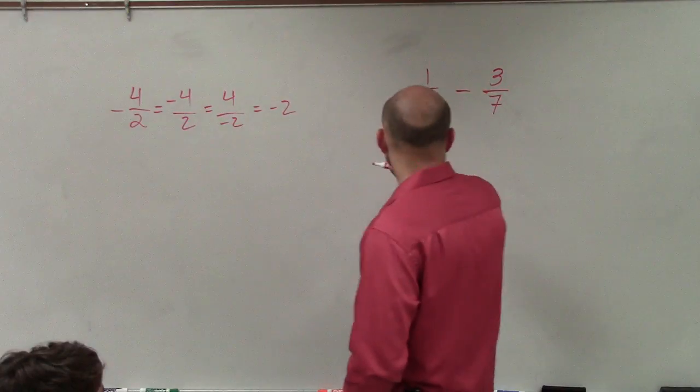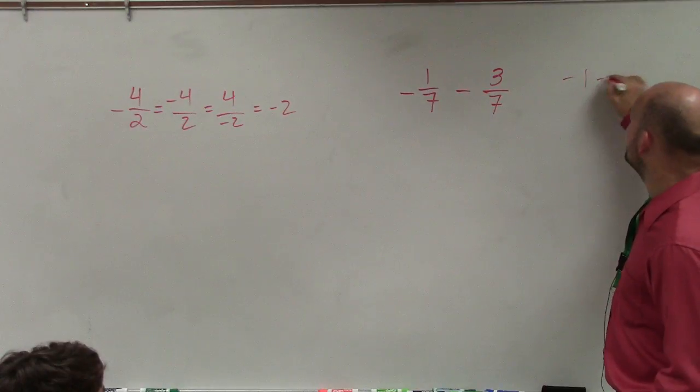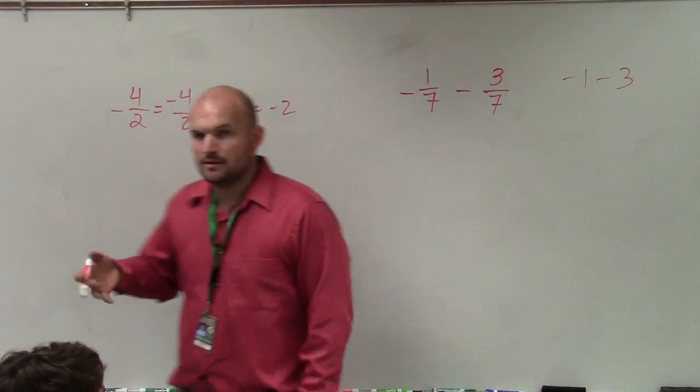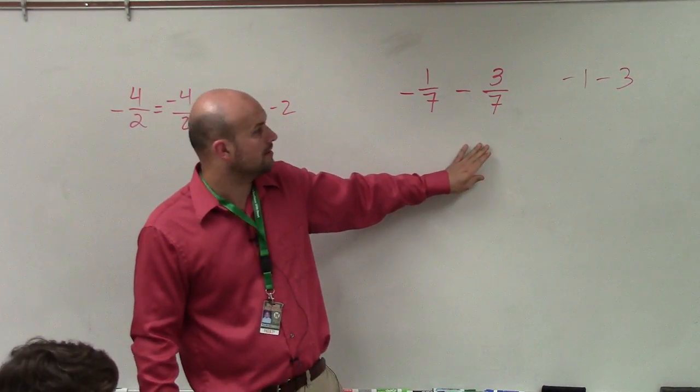So basically, again, forget about the fraction part. Just think of a negative number minus 3, right? Because we know that the denominators are the same, we're just going to write whatever our numerator is over 7.